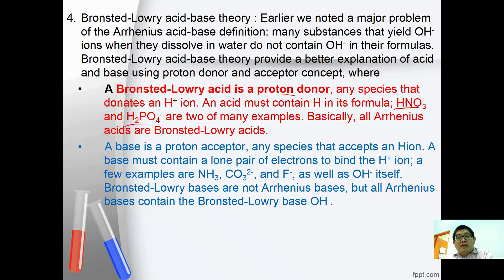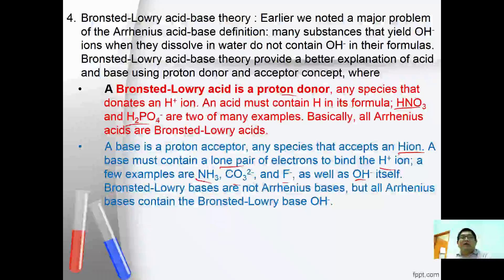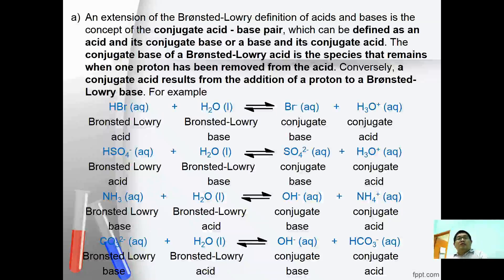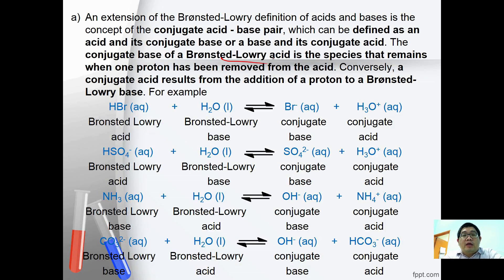A Bronsted-Lowry base is a proton acceptor — any species that accepts hydrogen ions. A base must contain a lone pair of electrons to bind with H+. Examples include ammonia, carbonates, fluoride, as well as the hydroxide ion itself. However, Bronsted-Lowry bases are not all Arrhenius bases, but all Arrhenius bases contain a Bronsted-Lowry base. An extension of Bronsted-Lowry theory is the conjugate acid-base pair, defined as an acid and its conjugate base, or a base and its conjugate acid. The conjugate base remains when one proton is removed from the acid, and a conjugate acid results from adding a proton to the base.